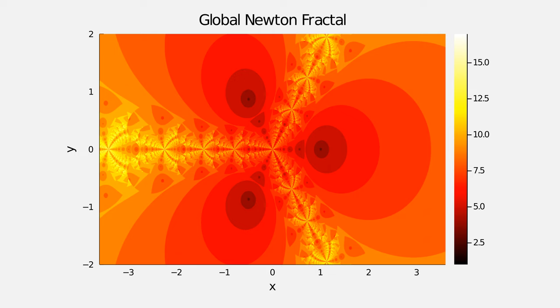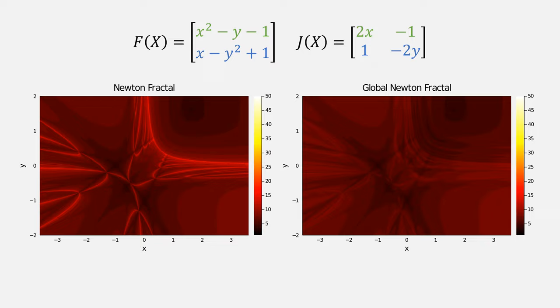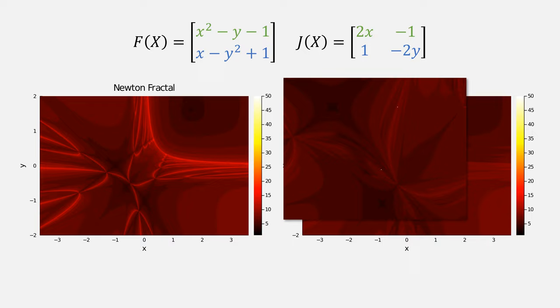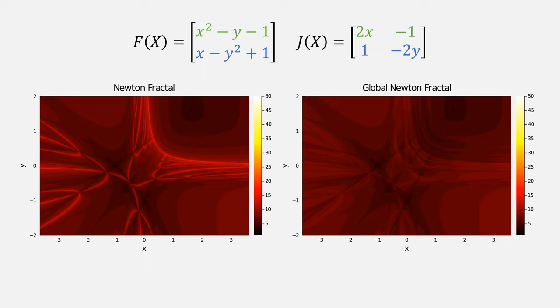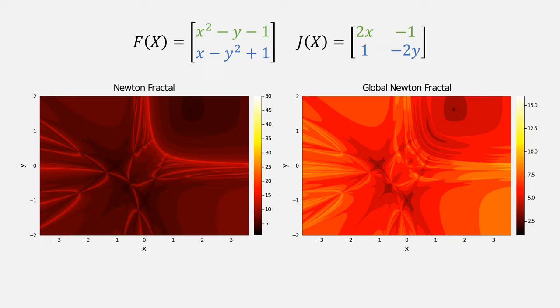Let's look at one other example. Here are the Newton and global Newton fractals from that system. Notice that the colors aren't that different. That's because these points here, where the matrix is singular, is causing everything to go awry. Let's fix that. Giving this fractal that converges much faster. Although, again, the backtracking steps are being hidden.